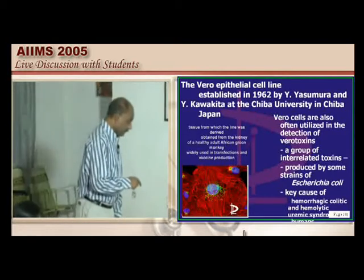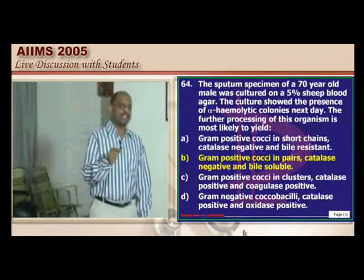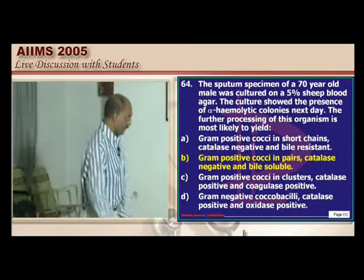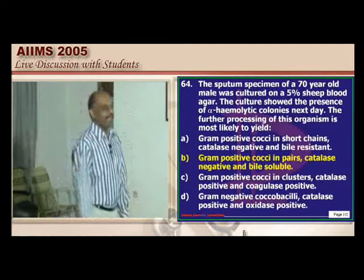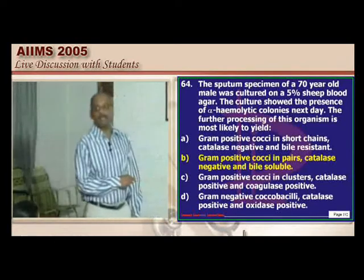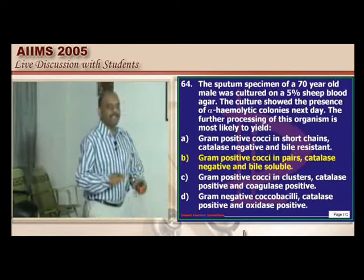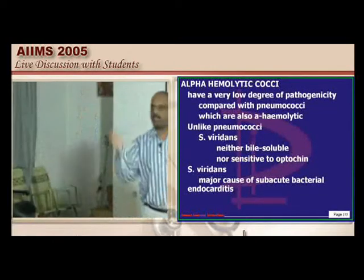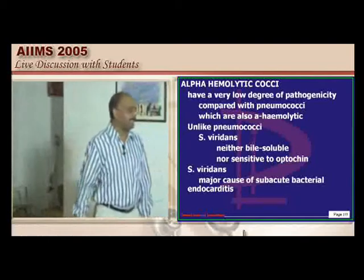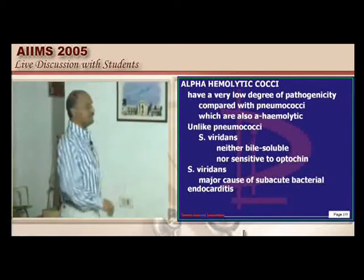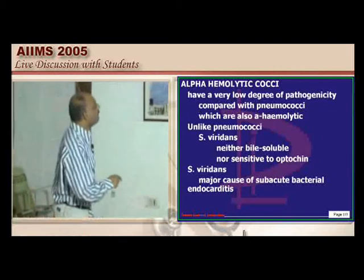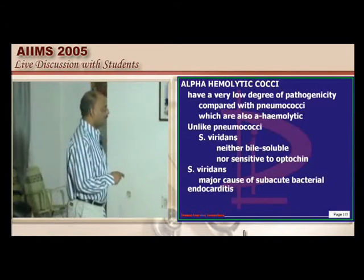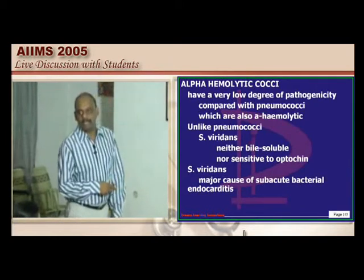Vero cell culture was discovered by Yasumura and is used for identifying Vero toxins produced by E. coli strains. If a virus or toxin is present, it produces cytolytic changes in the Vero cell culture. Moving to alpha-hemolytic cocci: they typically have a very low degree of pathogenicity compared to pneumococci, which are also alpha-hemolytic.